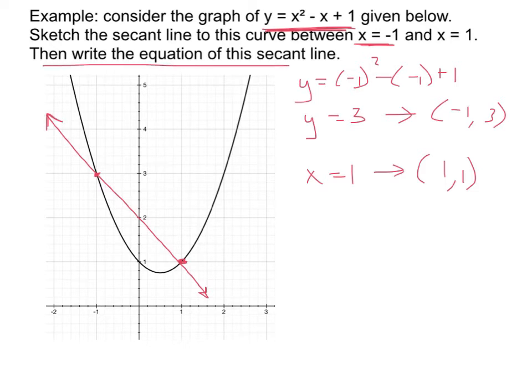And now, if we want to write the equation of that secant line, hey, good news, everybody. We have two points. And just like in the previous video, if you have two points, you can find a slope, and then you can write the equation of the line. So I'm going to do that now.